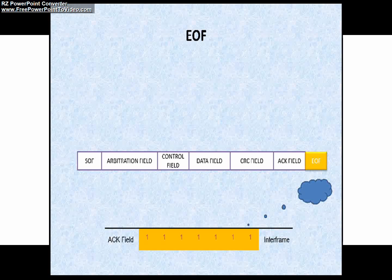The last field is end of frame. End of frame consists of 7 recessive bits as you can see in this picture, 7 recessive bits, and it marks the end of the data frame.